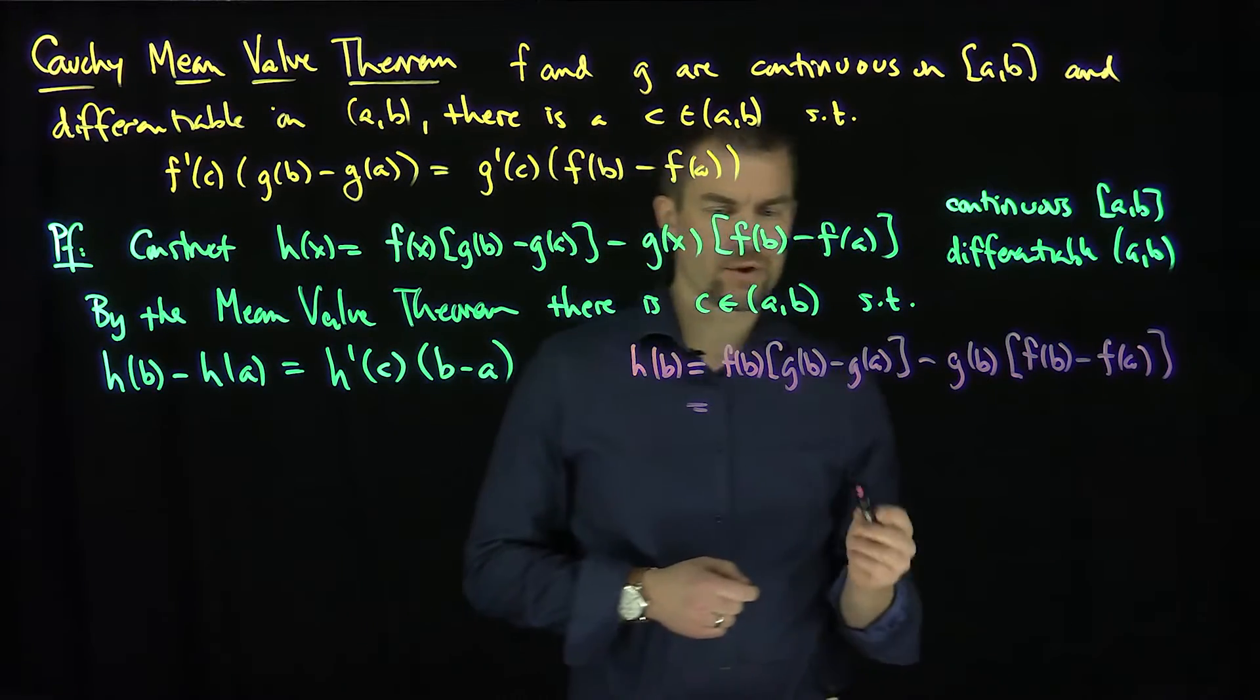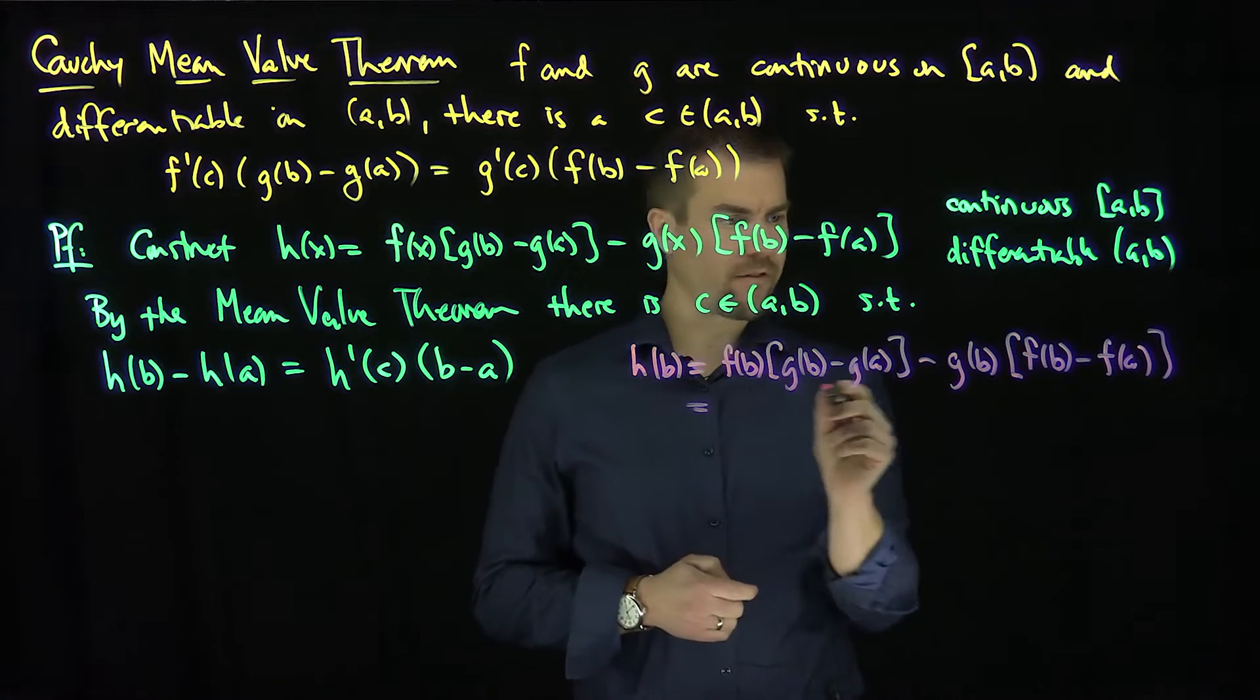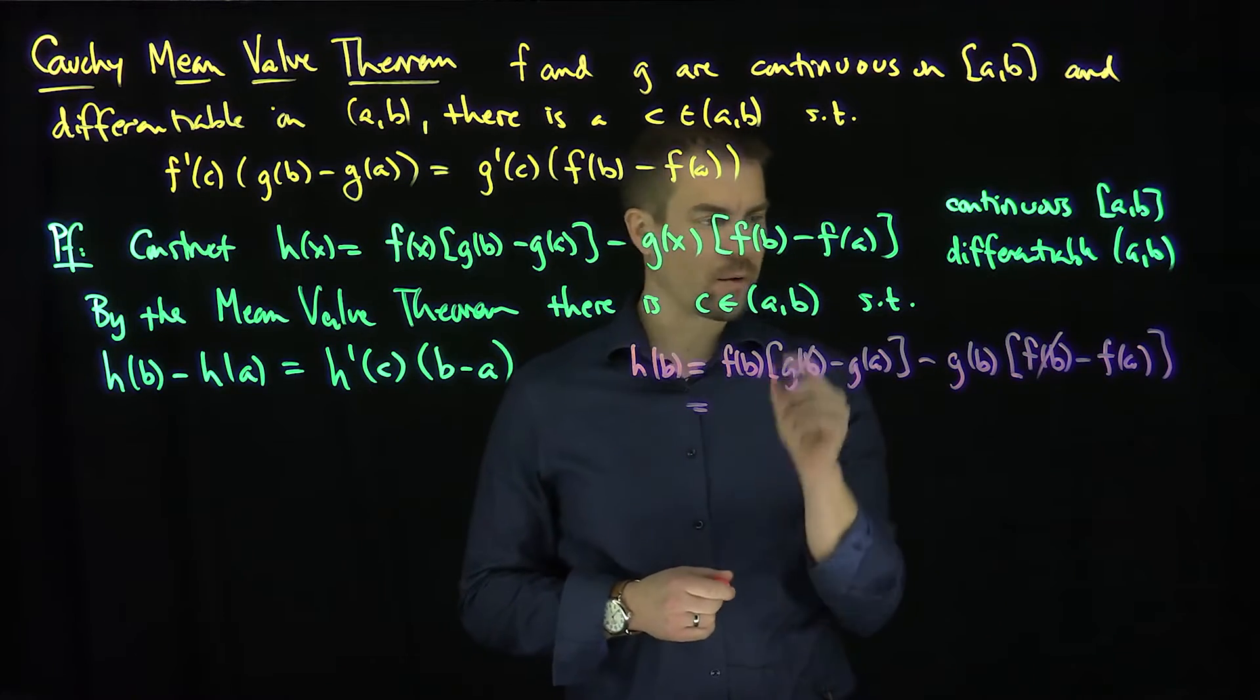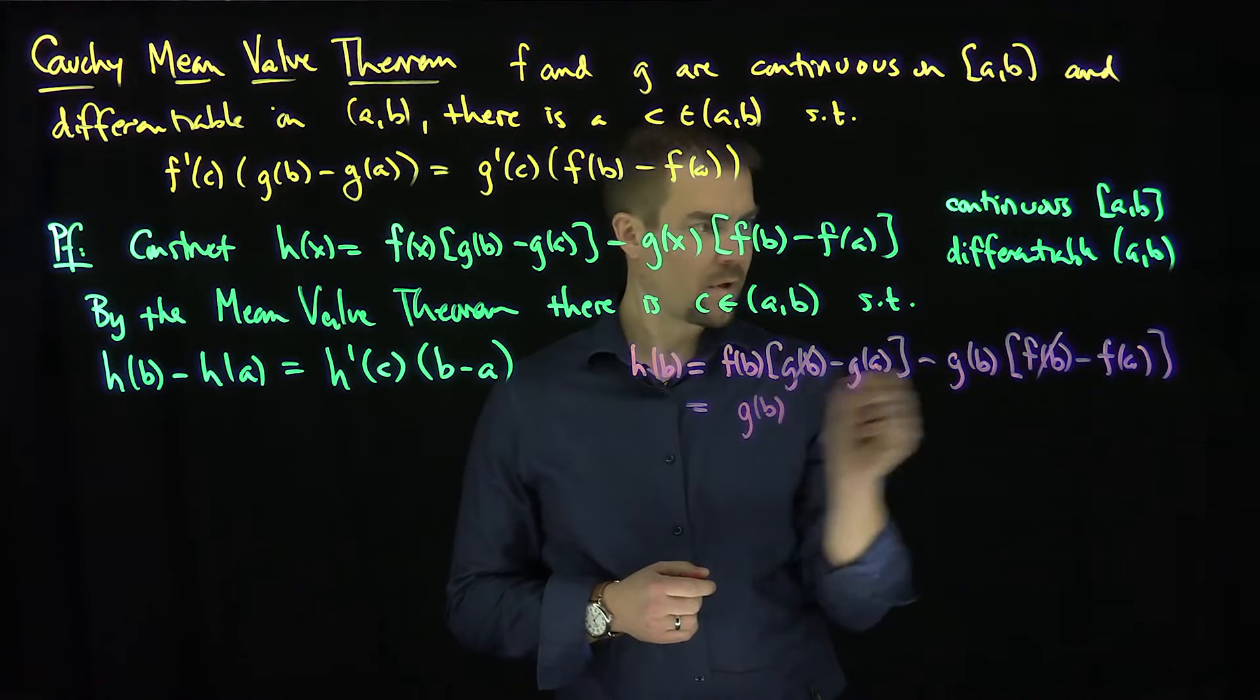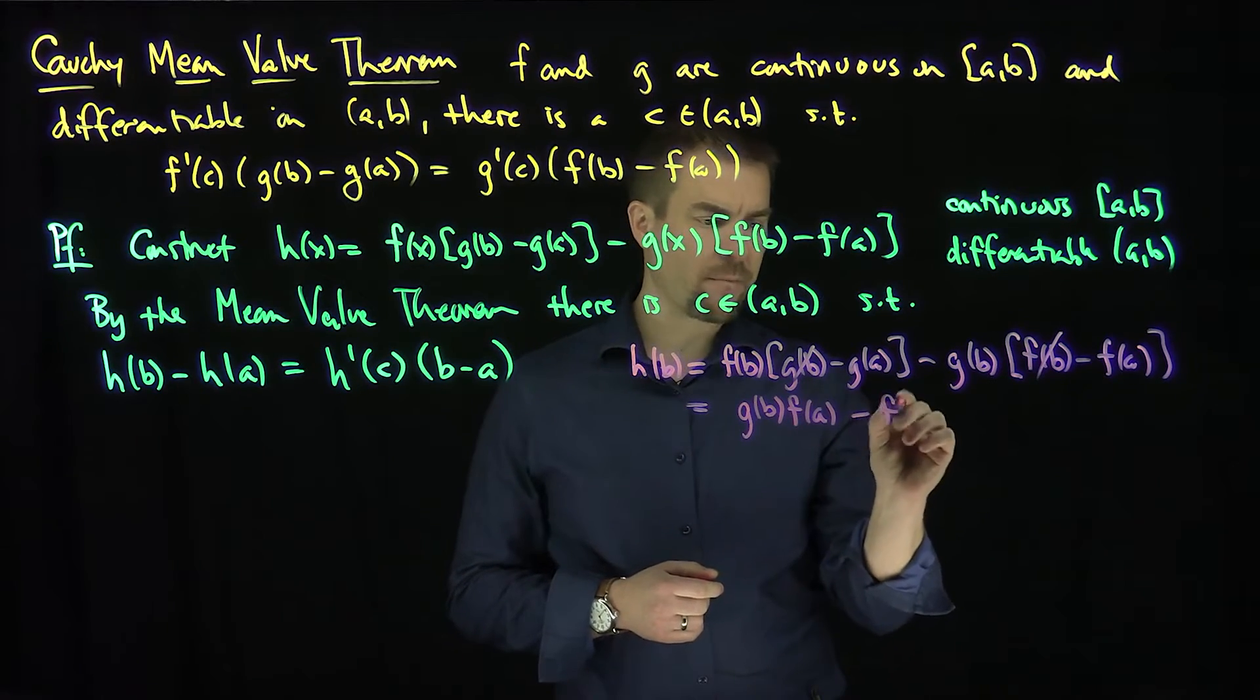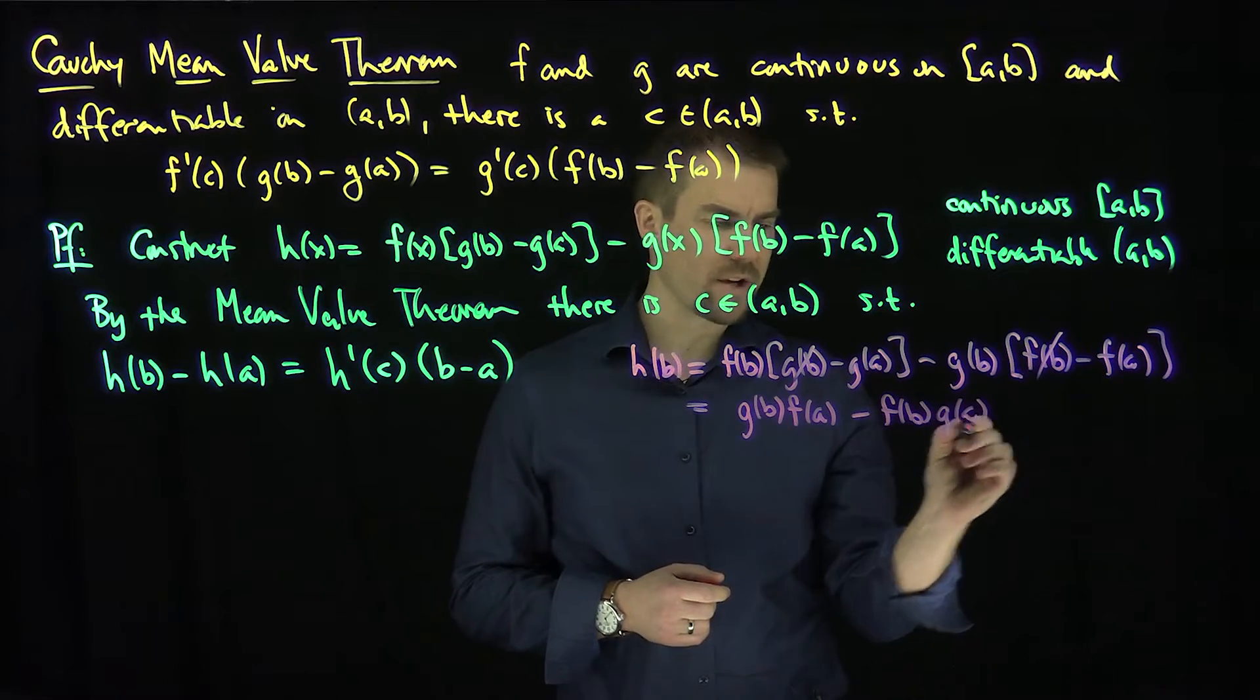And so that will simplify to what? Let's see, I have a g(b)f(b), positive, negative. So those are going to cancel out, right? And we're left with g(b)f(a) with a positive sign, and then f(b)g(a) with a negative sign.